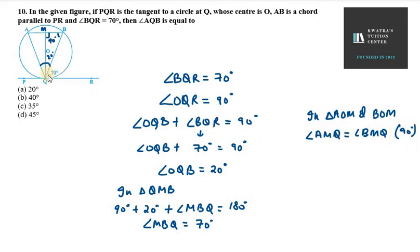The third one is MA equals MB, because AM is perpendicular bisector. Perpendicular from center to chord bisects the chord. So this chord AB is bisecting at point M, so AM equals MB.